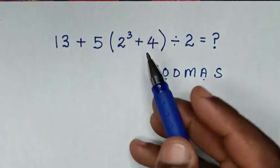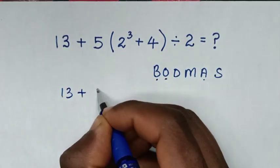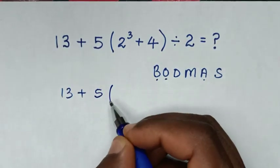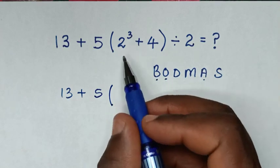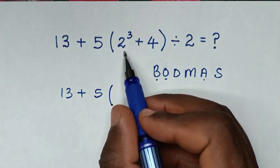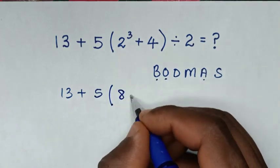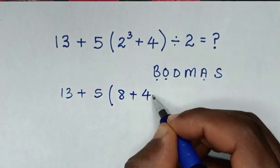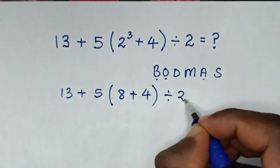So it will be 13 plus 5, then bracket. This 2 power 3 is same as 2 times 2 times 2, which is 8, then plus 4 bracket divided by 2.